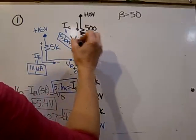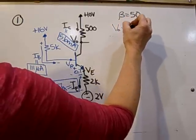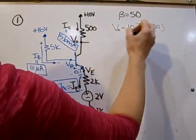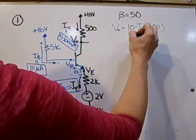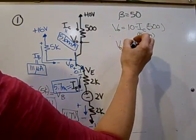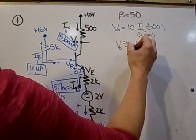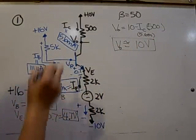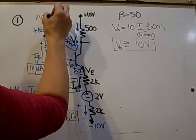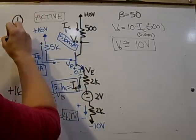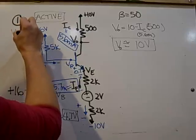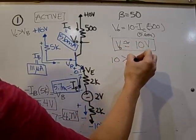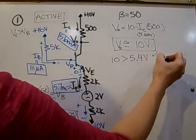Then VC, or VO, is 10 minus IC times 500, where IC is the 5.6 milli. So this gives a VO which is approximately 10 volts. So now to check that our assumption that it is in the active region, VC needs to be greater than VB for that to be true. In this case, 10 is greater than 5.4, and therefore our assumption is correct.